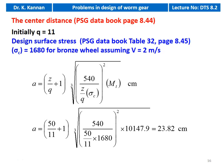We take Q = 11. Design surface stress from table 32, page 8.45: σc = 1680 for bronze wheel, assuming sliding velocity V = 2 m/s. According to the material and velocity, σc changes accordingly. Center distance: A = (z/Q + 1) × ∛(540 / ((z/Q × σc)² × design torque)). Substituting: A = (50/11 + 1) × ∛(540 / ((50/11 × 1680)² × 10147.9)) = 23.82 centimeter.